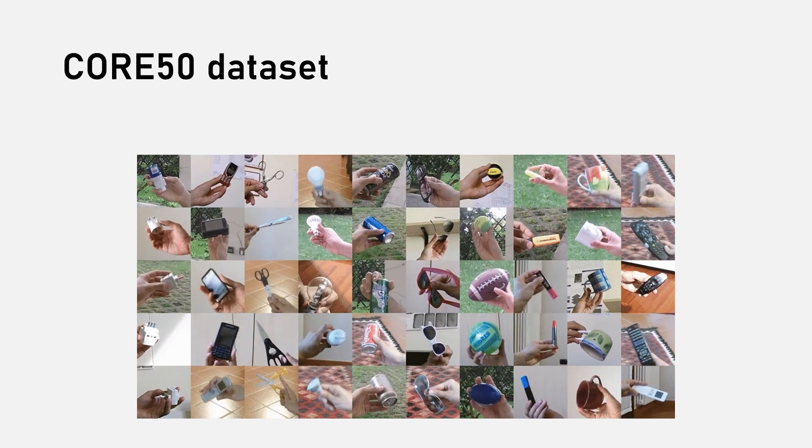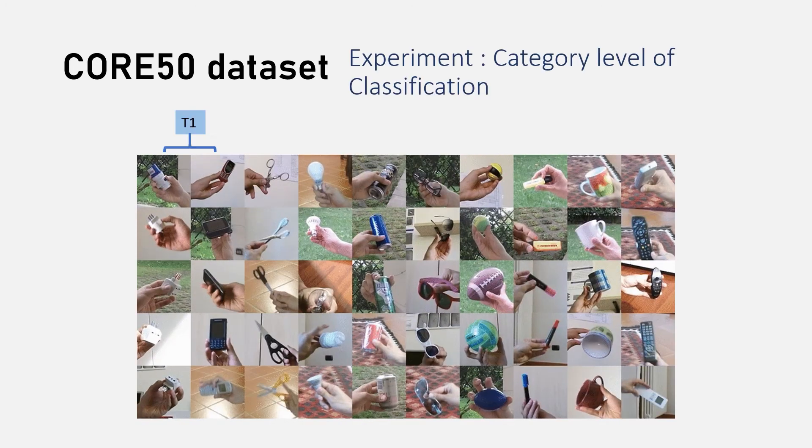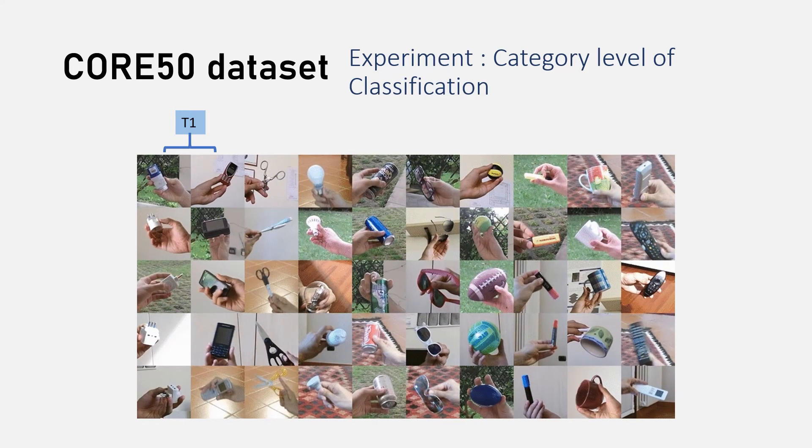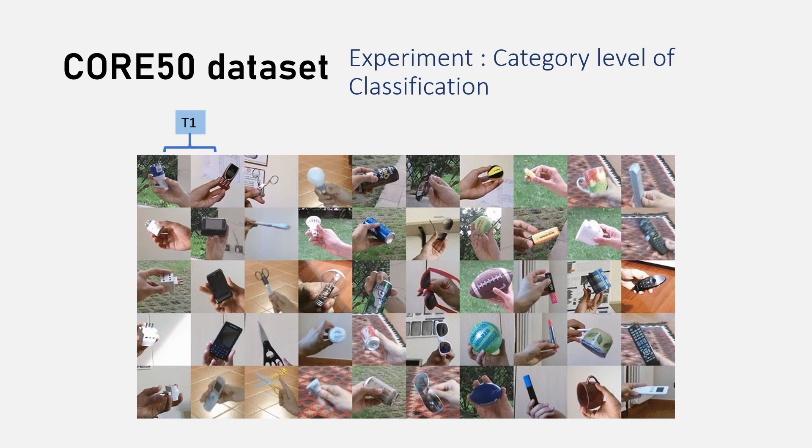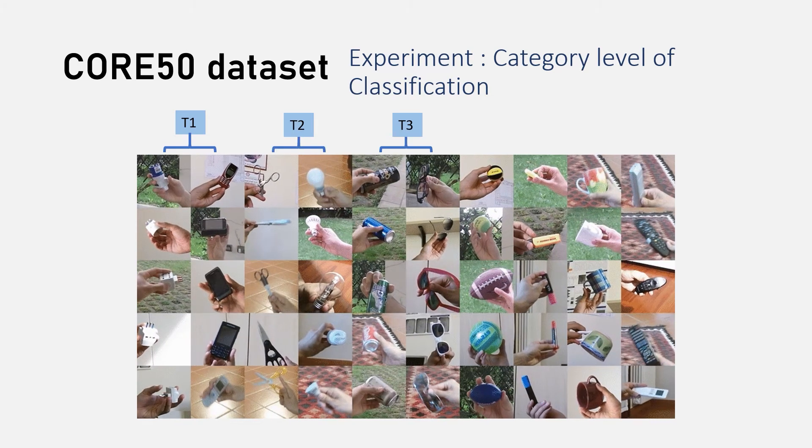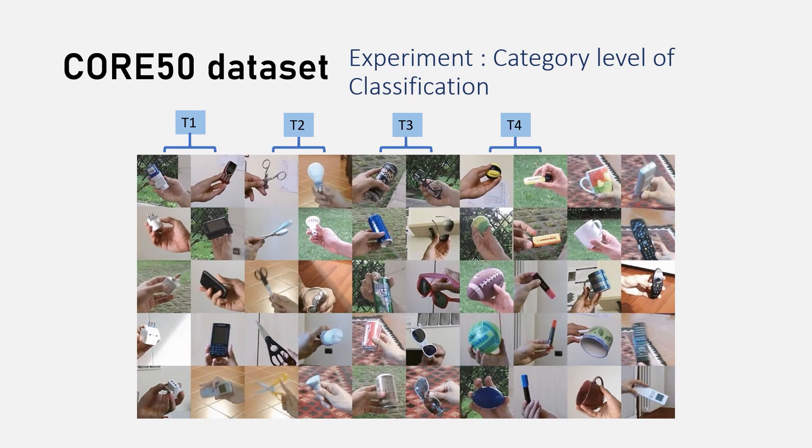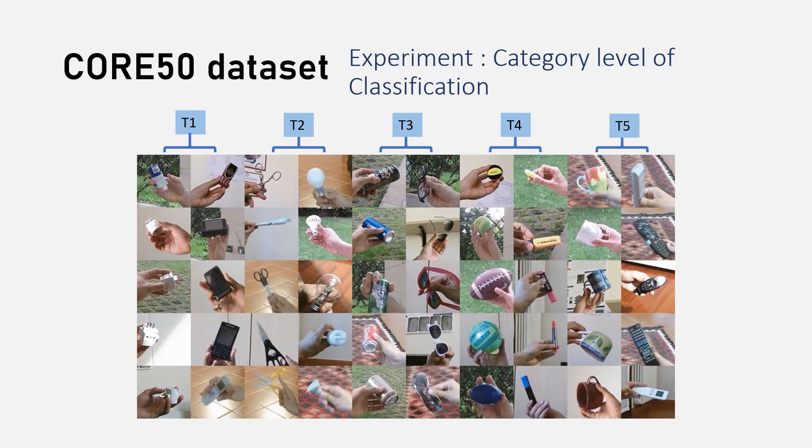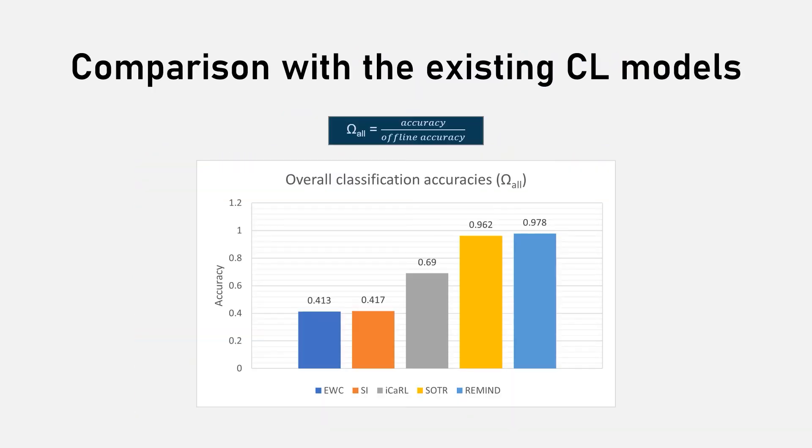For this experiment, we will be dividing 10 categories into 5 tasks where 2 categories will fall into 1 task. Here we are trying to compare the existing continual learning methods using the normalized accuracy.